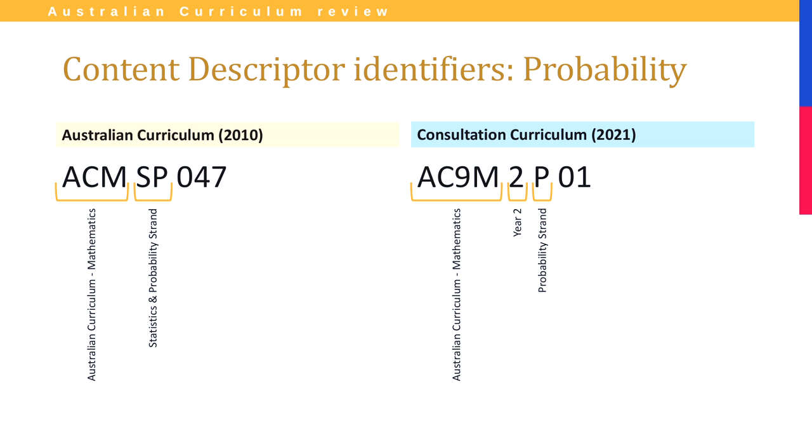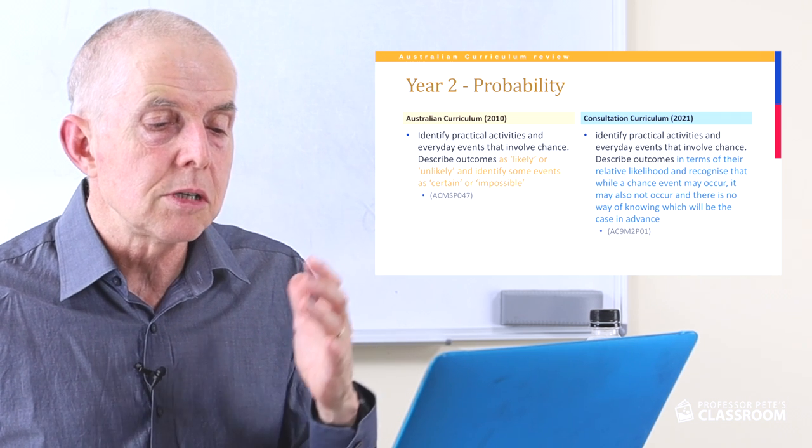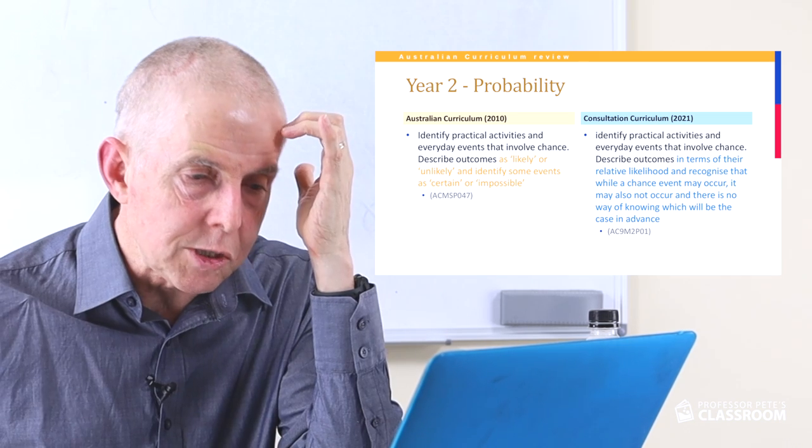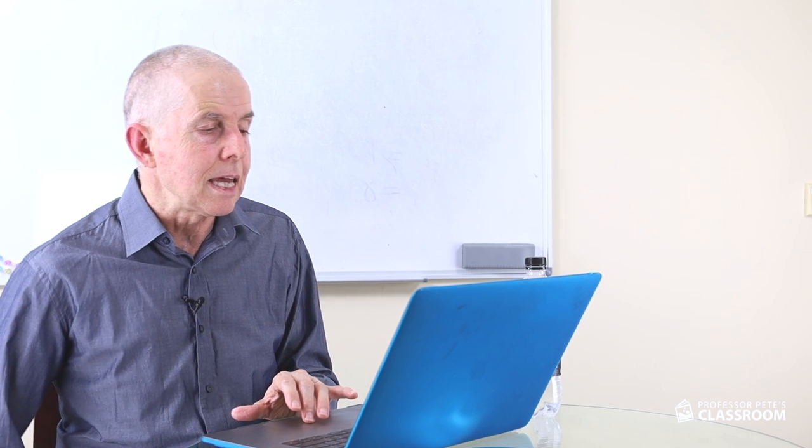There is a single probability content descriptor with code 2P01: identify practical activities and everyday events that involve chance, and describe outcomes with language about relative likelihood. There's useful new explanatory language — a chance event may occur or it may not occur, and there's no way of knowing which will be the case in advance. However, words like likely, unlikely, certain and possible have been removed; I think teachers should use that language and it would be good to reinsert it.